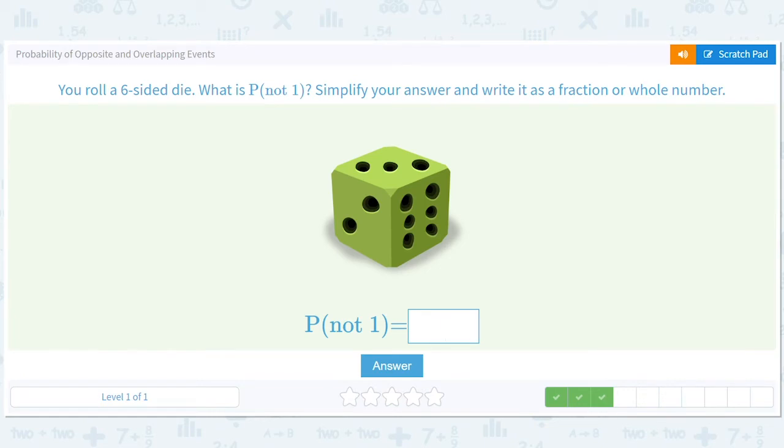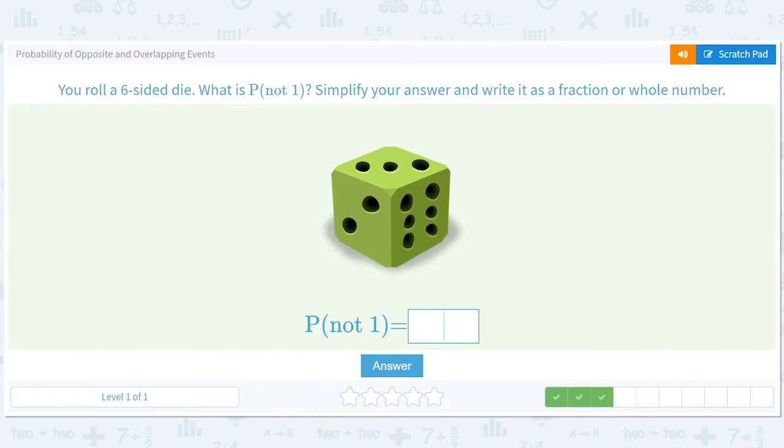This is a better question, right? Sometimes when questions are too simple, they're confusing. This one's better. You roll a six-sided die. What is the probability of not getting a one? Okay. So the probability of getting a one is one-sixth. The probability of not getting a one is one minus one-sixth because probabilities add up to one or 100%. That's the moral here, right? So one minus one-sixth is six over six minus one over six, which is five over six. So the probability is five-sixths.